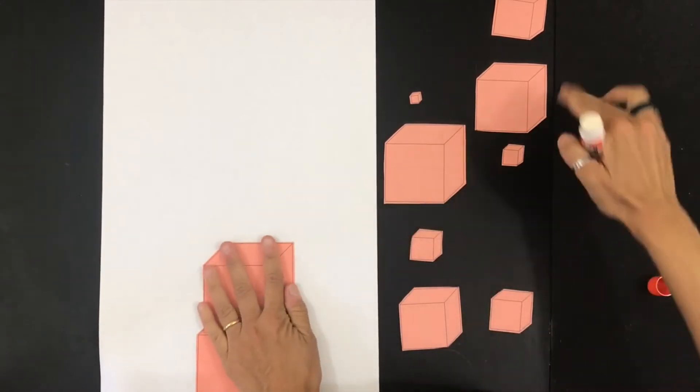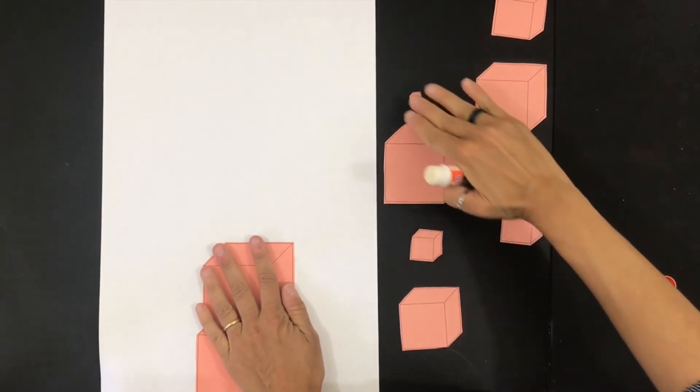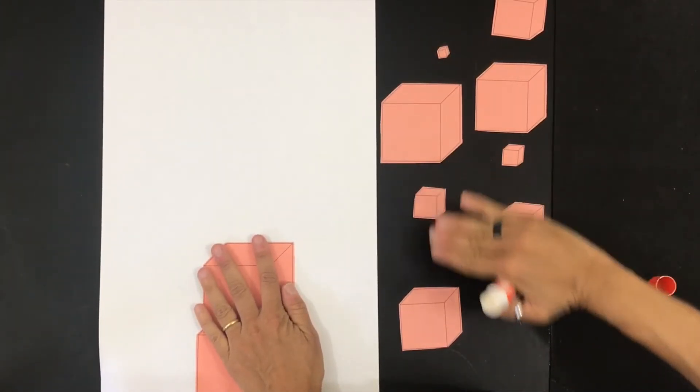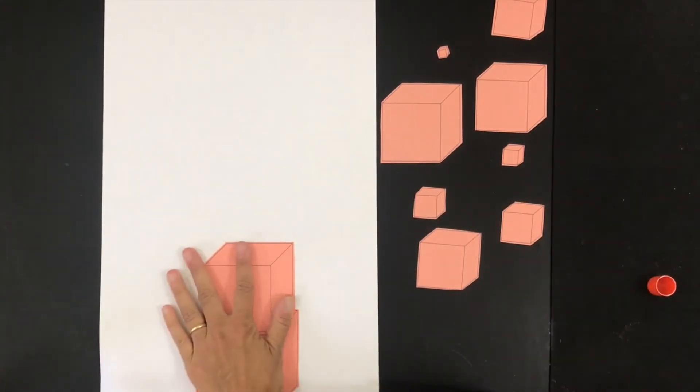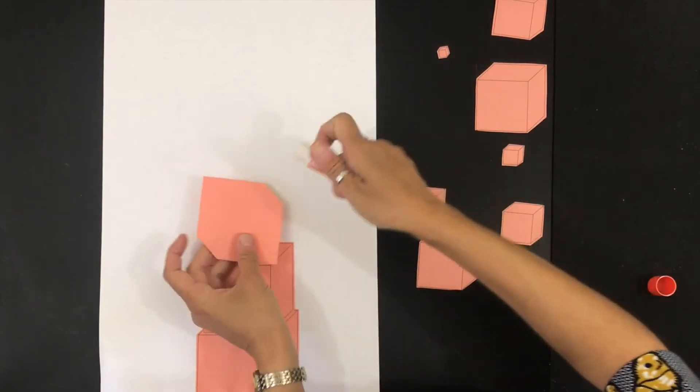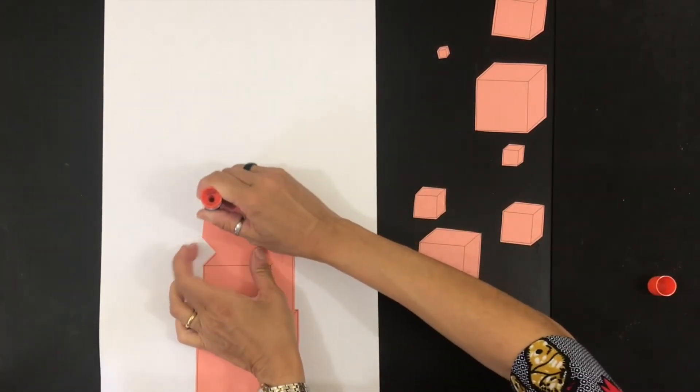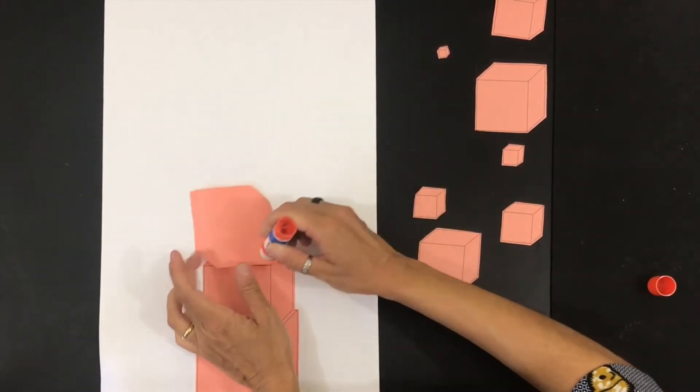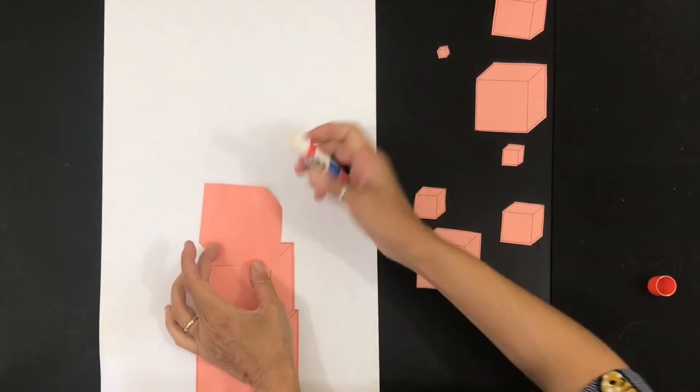All right, let's take a look. Out of these cubes which one is the biggest? Yes, this one. I always like to go around the edge and I'm using a glue stick and then a little bit in the middle.